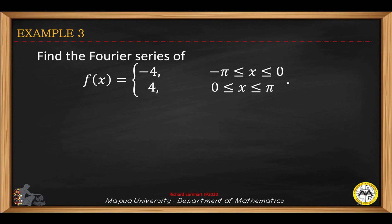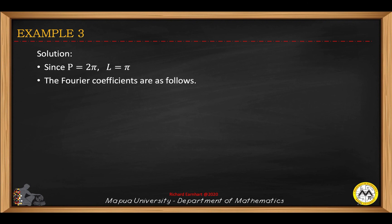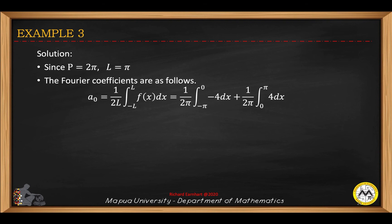For example number 3, we find the Fourier series for f(x) defined as negative 4 from negative π to 0, and positive 4 from 0 to π. The period is equal to 2π, so l equals π. The Fourier coefficients will be as follows. We substitute l equals π, giving 1 over 2π. We split the integral from negative π to 0 with f(x) equals negative 4, and from 0 to π with f(x) equals 4. The integral for a sub zero is equal to zero.